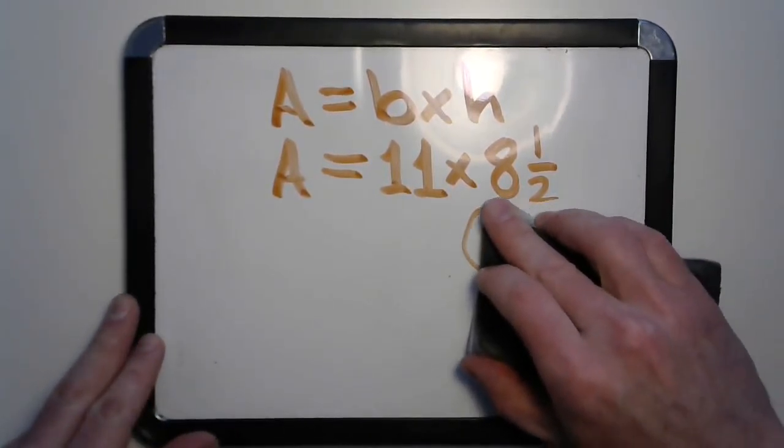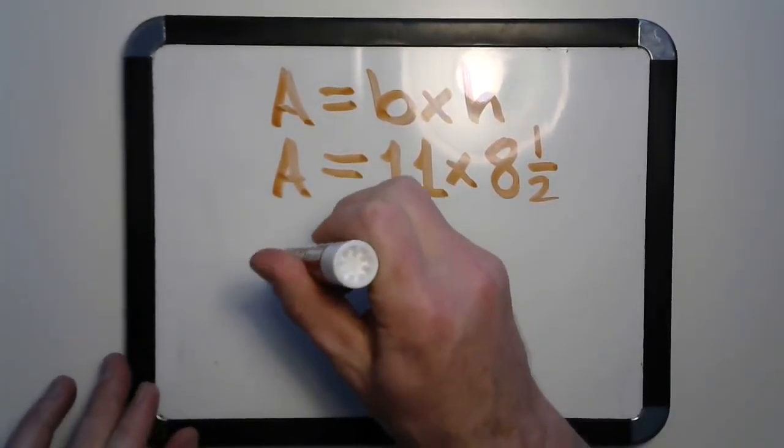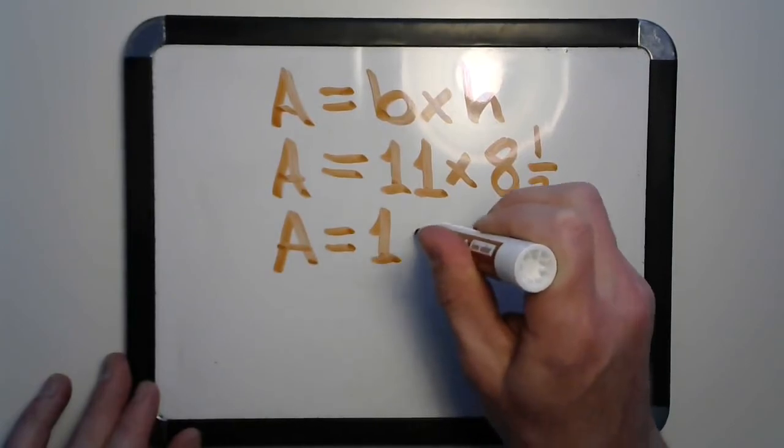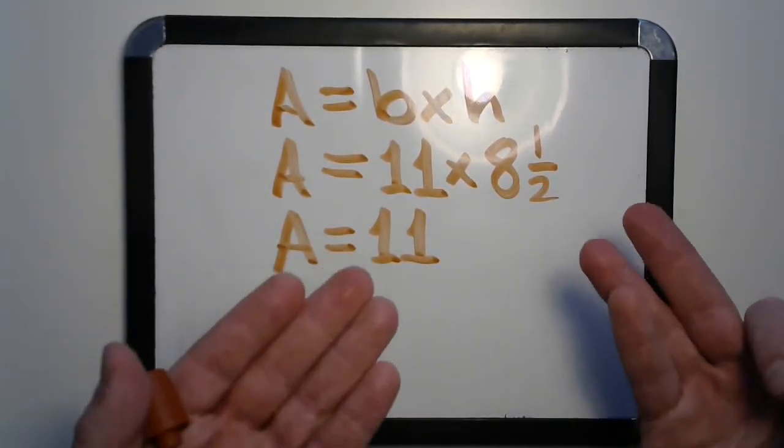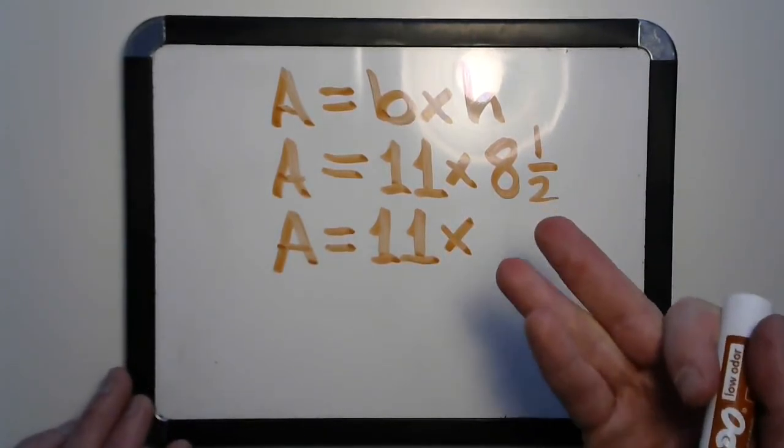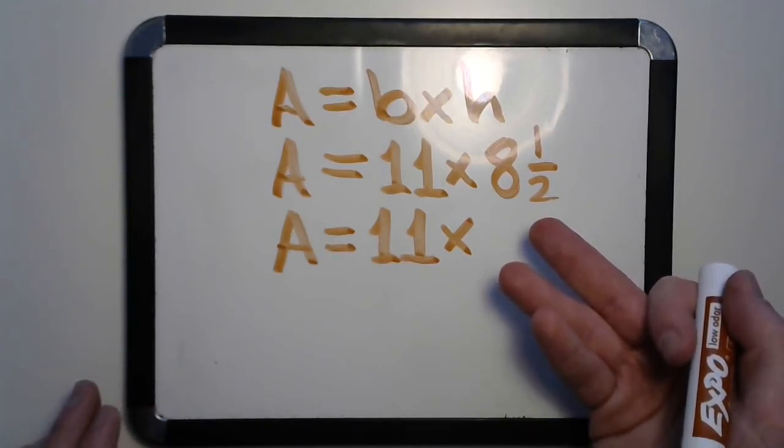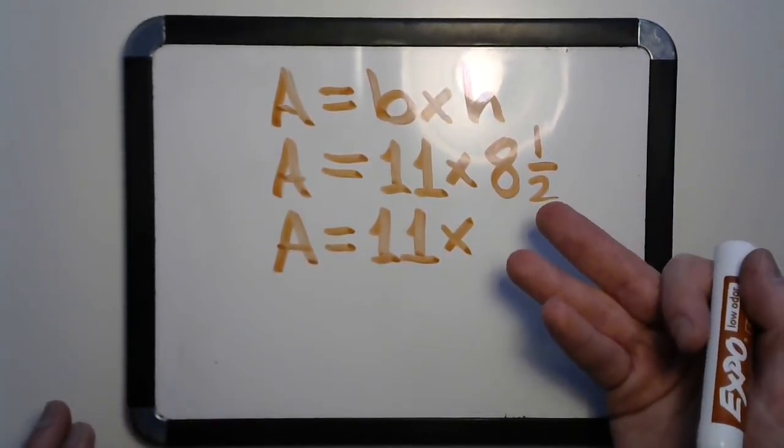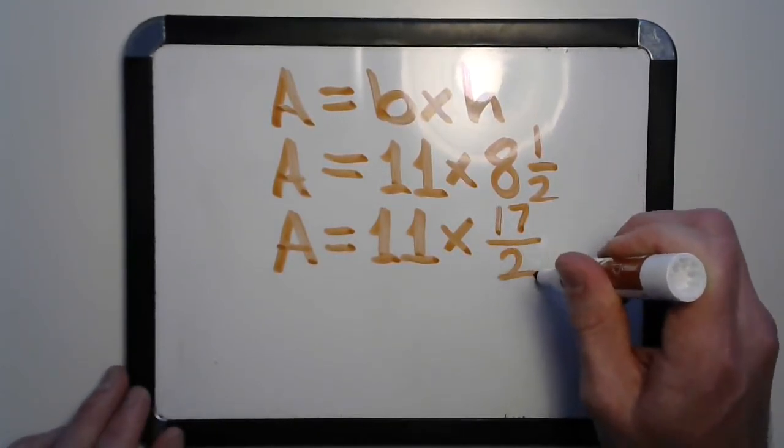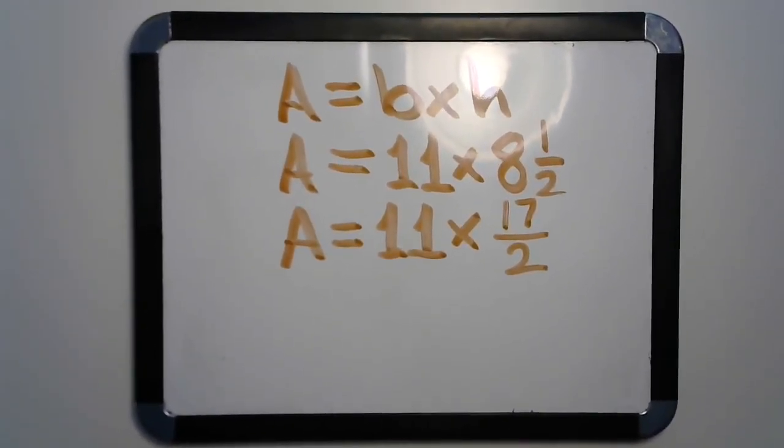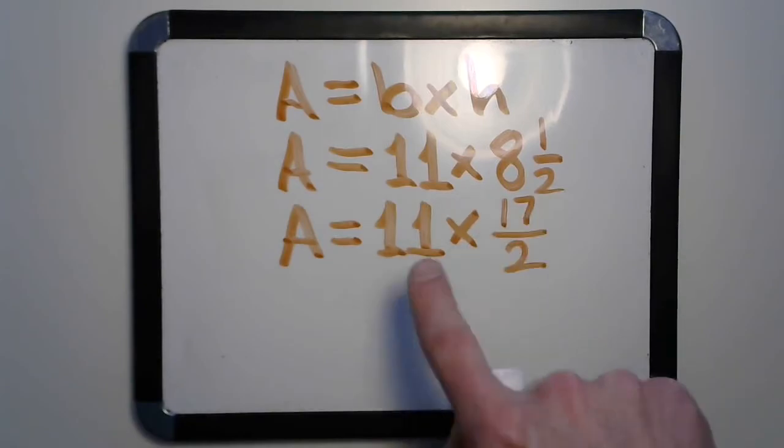If you know your way around decimal fractions, you're welcome to solve that way, but I think we'll stick with fractions this time. We're gonna have to rewrite this one more time because that fraction would be nicer if it was an improper fraction, right? What would that improper fraction be? 17 halves. Now we can multiply this a little bit easier. We need to take our 11 and our 17 and multiply those together.